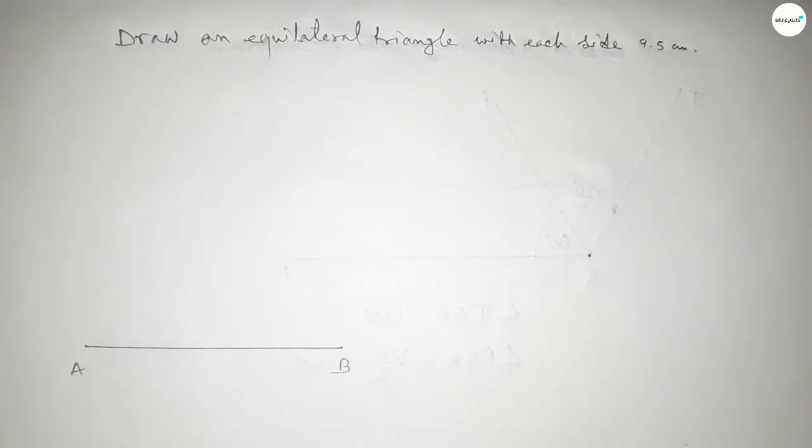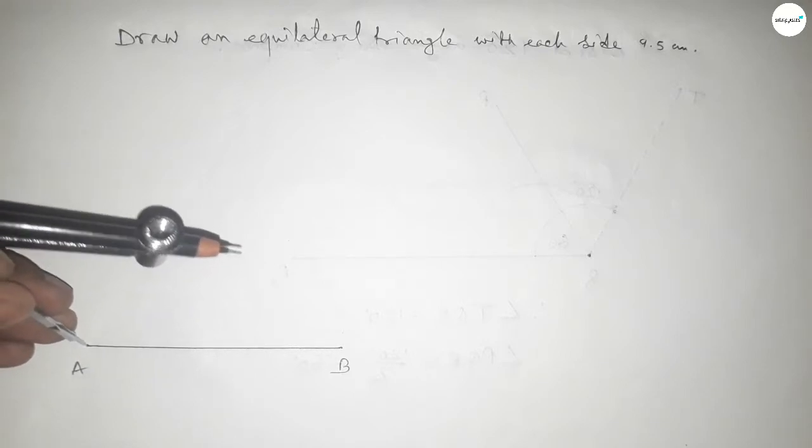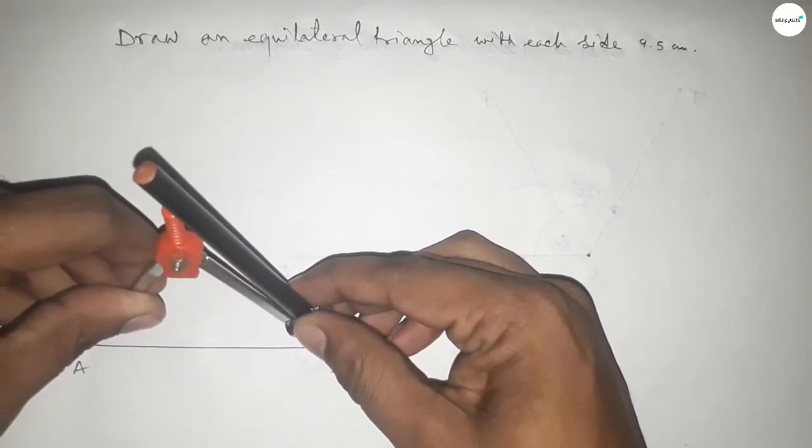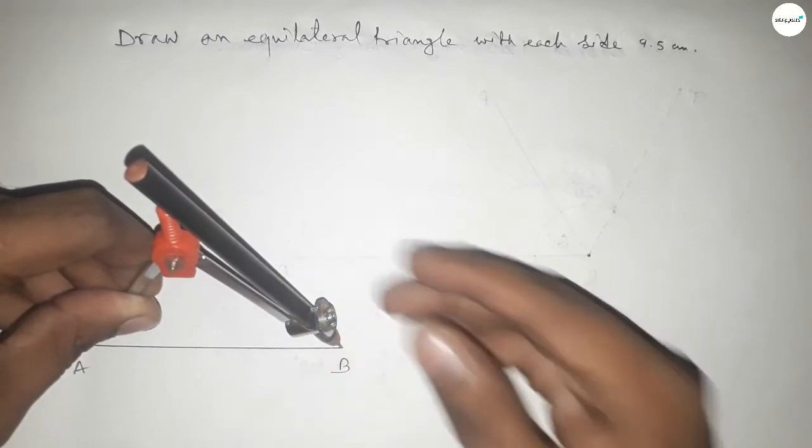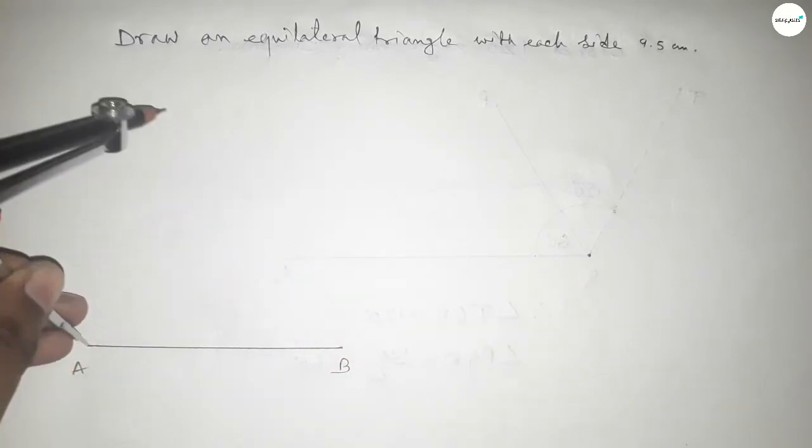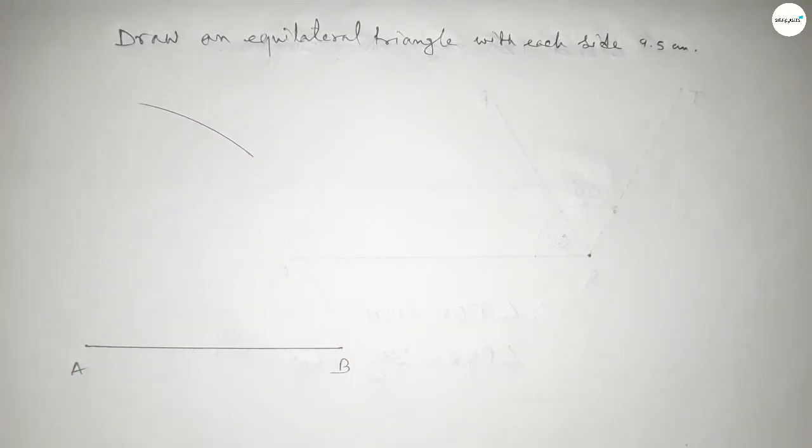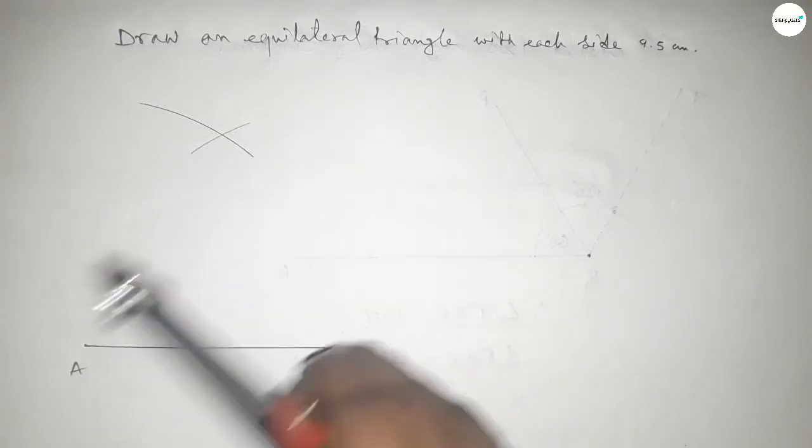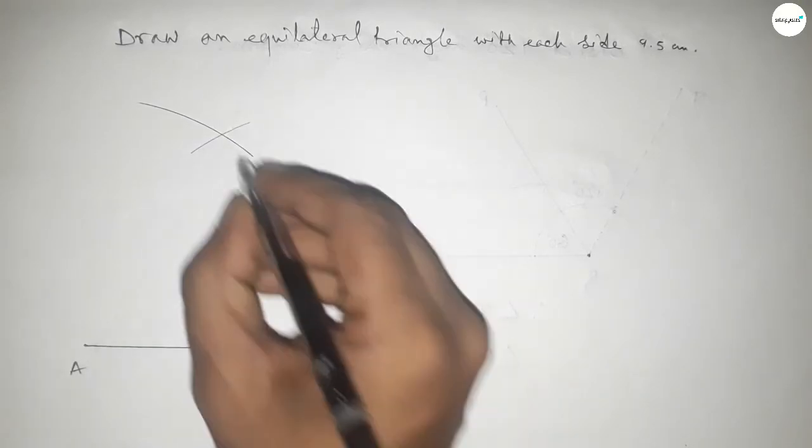So line AB equal to 9.5 centimeter. Now taking the length AB by compass by this way and drawing an arc here with same length and putting the compass here and cut here so both the curves intersect at a point.